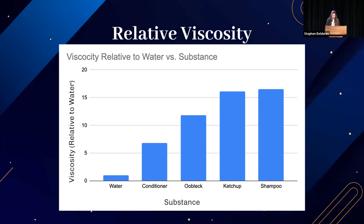I thought ketchup, shampoo, and conditioner would have similar viscosities, with oobleck slightly lower. Surprisingly, that was not the case. Water's relative viscosity was 1. Conditioner had the next lowest at 6.8, then oobleck at 11.8, and then ketchup and shampoo had very similar values of 16.1 and 16.5 respectively. It was surprising how low conditioner's viscosity was, especially since I've always had a harder time getting conditioner out of a bottle than shampoo.